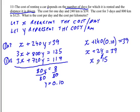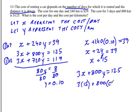So what we found is the cost per day is $15, and the cost per kilometer is 10 cents. And so what we can do is just check to make sure we got it right. So 3x plus 800y is equal to 125. So 3 times 15 plus 800 times 0.1. Well, 3 times 15 is 45, plus 800 times 0.10 is $80.